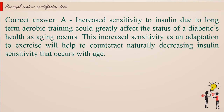Correct answer b. Decreased sensitivity to insulin due to long-term aerobic training could greatly affect the status of a diabetic's health as aging occurs. This increased sensitivity as an adaptation to exercise will help to counteract naturally decreasing insulin sensitivity that occurs with age.